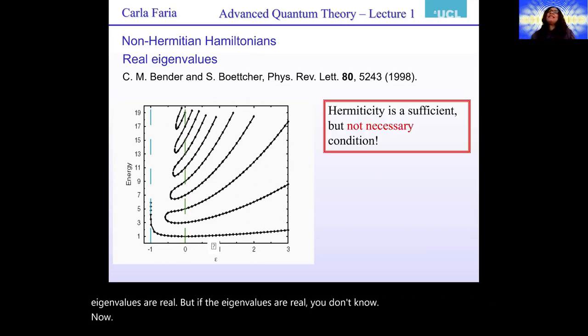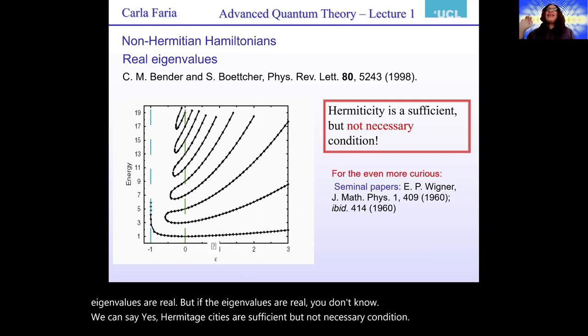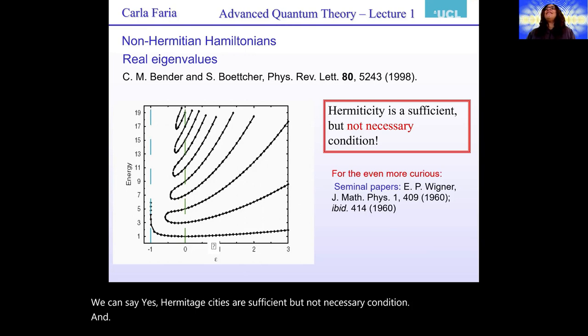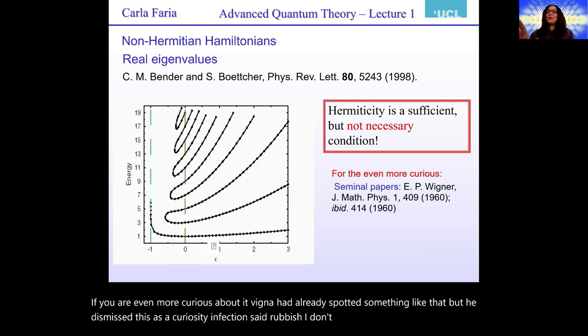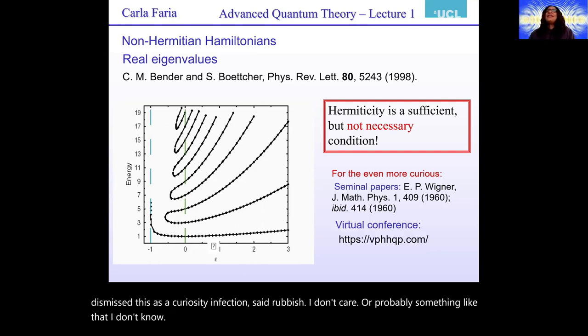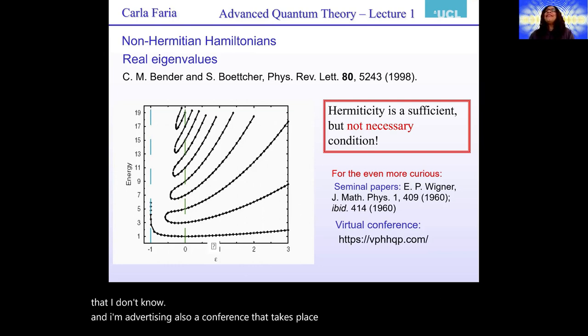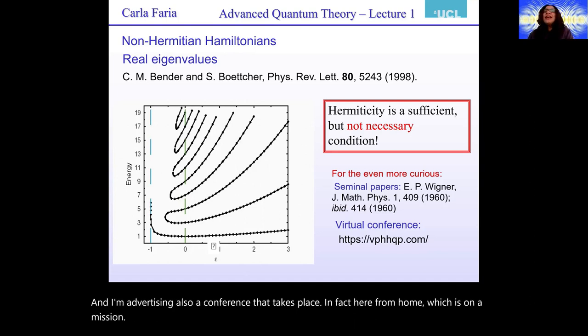Now, we can say yes, Hermitian is a sufficient but non-necessary condition. And if you are even more curious about it, Wigner had already spotted something like that, but he dismissed this as a curiosity. He said, oh, rubbish. I don't care. Probably something like that. And I'm advertising also a conference that takes place here from home, which is on non-Hermitian Hamiltonian Systems, if you're curious. Have a look at the link below.